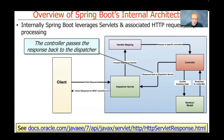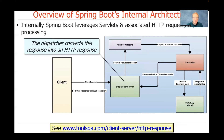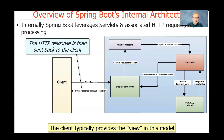Once the controller gets the return results from the service and model, it packages those responses and passes them back to the dispatcher. The dispatcher then converts the response into an HTTP response — taking whatever internal format it uses and putting it into text-oriented HTTP responses — and sends those back to the client. In this model, the client provides the view, the user-facing visualization and interface. The server provides the model, which is the persistence part. And the controller orchestrates the interaction between HTTP messages and Java method calls.